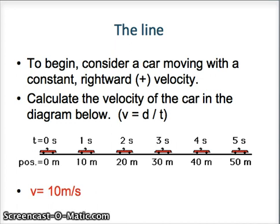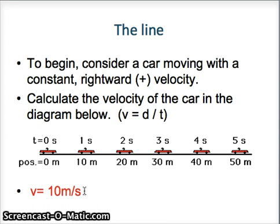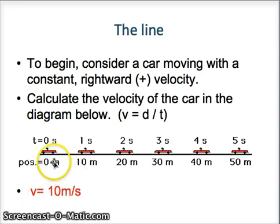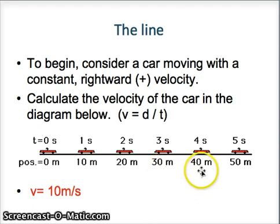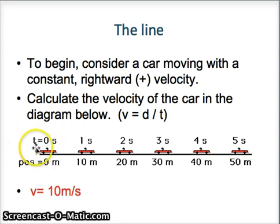Let's begin. We have a car here in red, and it's moving in a rightward or positive direction at constant velocity. If we calculate the velocity of the car in this diagram, we can determine that velocity equals 10 meters per second, because for every second, the distance increases by 10 meters. So velocity is 10 meters divided by 1 second, or 50 meters divided by 5 seconds — 50 divided by 5 gives 10 meters per second.